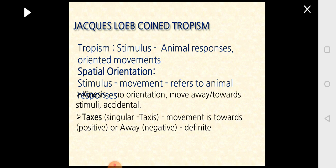It was Jakob Loeb who coined the term tropism, defining it as the response of the animal to the stimulus by showing movements. This type of movement is called spatial orientation. Under spatial orientation, there are two types: kinesis and taxis.